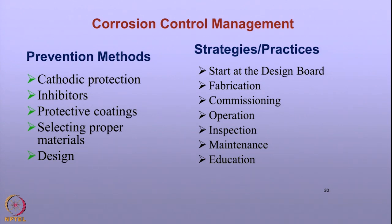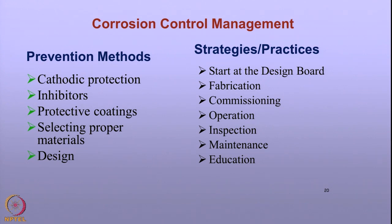It is not sufficient to have preventive methods — you should also have strategies and practices so that we can implement these preventive measures; without which corrosion control is not possible. The most effective way of preventing corrosion is to start at the design board — that is where you decide what material to choose, whether to go for welding or not, whether to go for cathodic protection or not. Starting at the design board allows you to have effective control of corrosion during operation and even during maintenance.